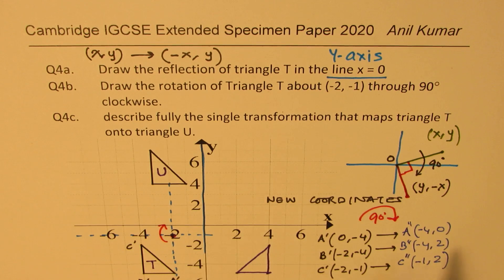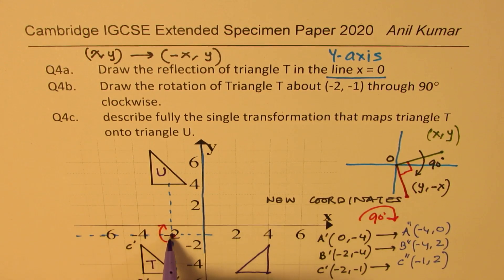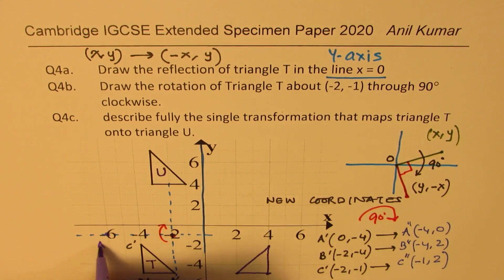So A dash is minus 4, 0. That will appear at, we are looking with reference to a new coordinate, so from minus 2, it goes to minus 6. It doesn't really move along the y-axis as per the new. So minus 4, 0 is our point. So that is A double dash.